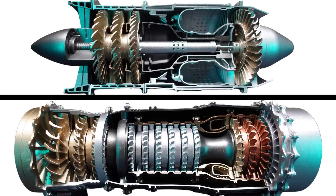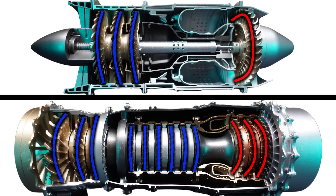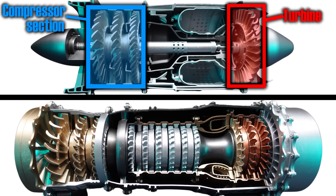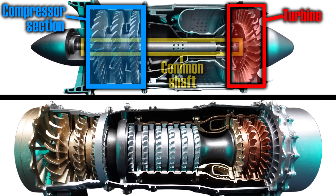Another key difference between our ancient turbojet and our modern low bypass turbofan is the increased number of compressor and turbine wheels in the more modern engine. Our turbojet has only a single compressor section and a single turbine wheel to harness the energy of the expanding gases from the combustion chamber. The turbine wheel and the compressor wheels are all mounted together on the same shaft, so an increase in turbine speed leads to an equal increase in compressor speed.